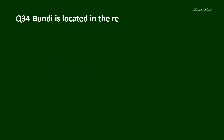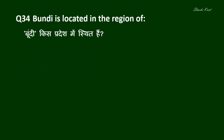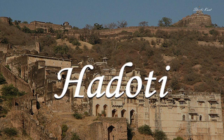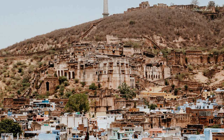Question No. 34: Bundi is located in the region of — A. Hadothi, B. Chamba, C. Dilwara, D. Jaipur. So the correct answer is A. Hadothi. Bundi is a town in the Hadothi region of Rajasthan state in Northwest India.